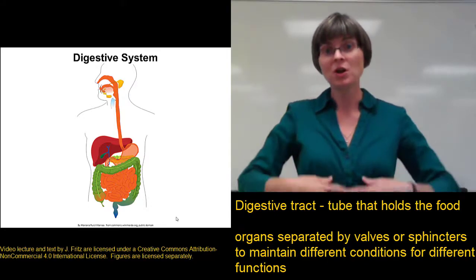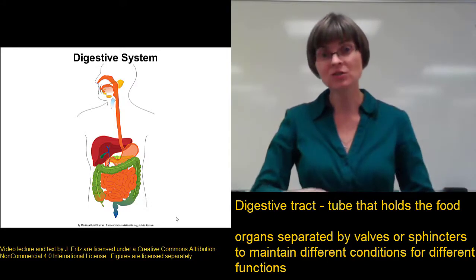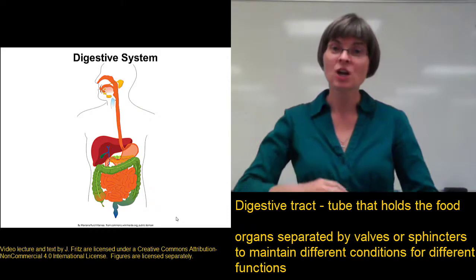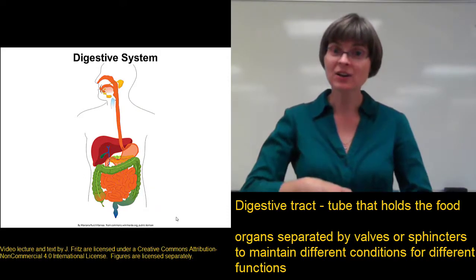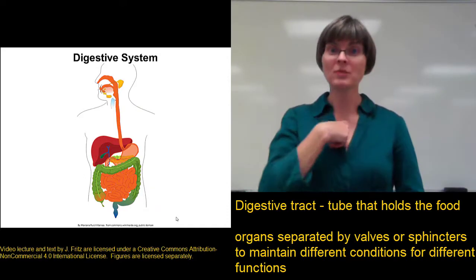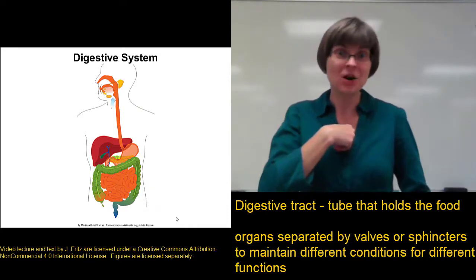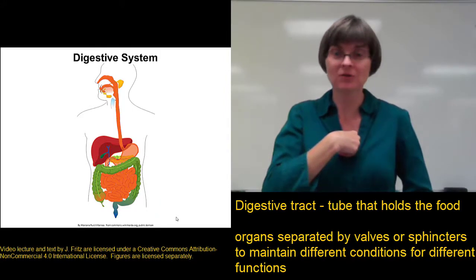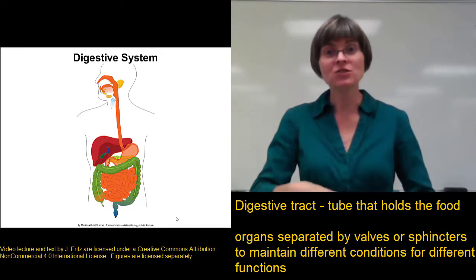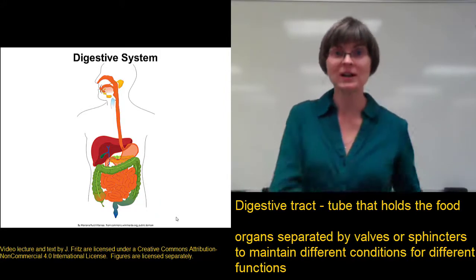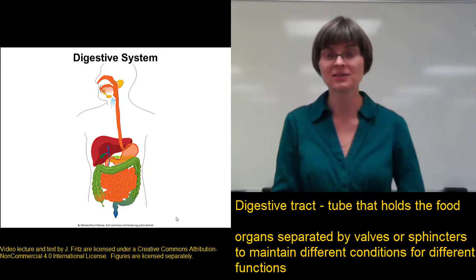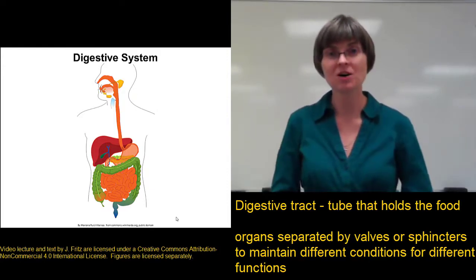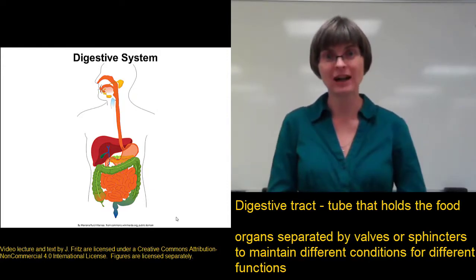For example, for the stomach to do its job, it maintains a very low pH. Do you want that very low pH to go up into your esophagus? No — that's heartburn and it's not very comfortable. And you don't want that really low pH spreading down into the small intestine either. So we separate the different segments of the digestive tract.